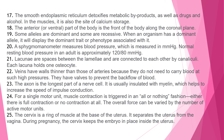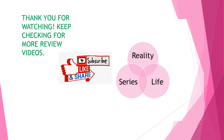Explanation 24: For a single motor unit, muscle contraction is triggered in an all-or-nothing fashion — either there is full contraction or no contraction at all. The overall force can be varied by the number of active motor units. Explanation 25: The cervix is a ring of muscle at the base of the uterus that separates the uterus from the vagina. During pregnancy, the cervix keeps the embryo in place inside the uterus.